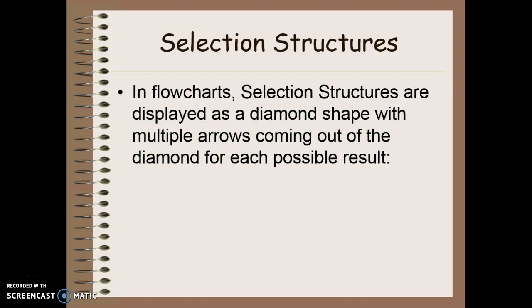In flow charts, we use a simple shape like a diamond to show selection structures, show options in our code. And we always have one arrow coming into that diamond, then we have the question that we're asking, and then we have the true or false response coming out.